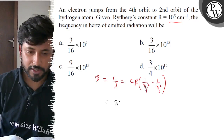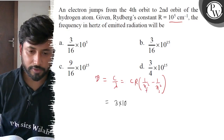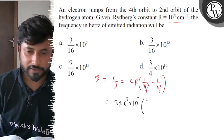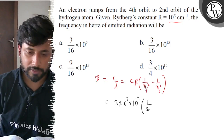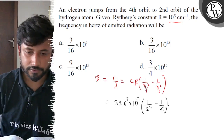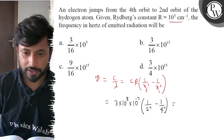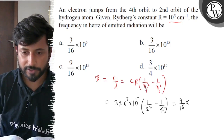For c, use 3×10 to the power 8. Rydberg constant is 10 to the power 7 (converted). n_final will be 2 (second orbit), so: 1 by 2 squared minus 1 by 4 squared, which gives 1/4 minus 1/16 = 3/16. So frequency = c × R × 3/16 = 3×10 to the power 15 by 16.